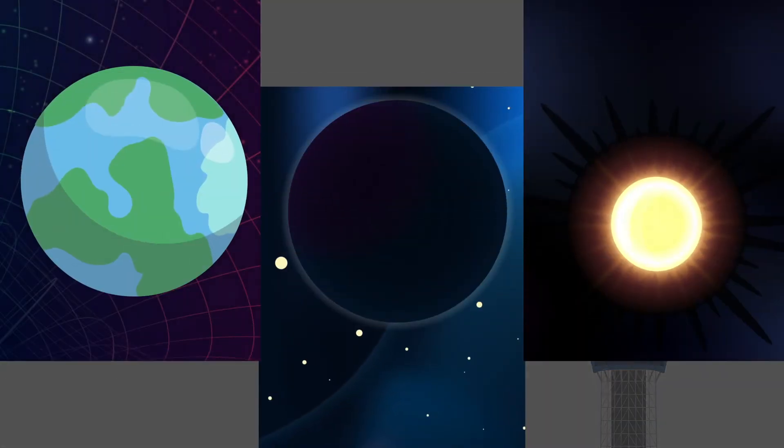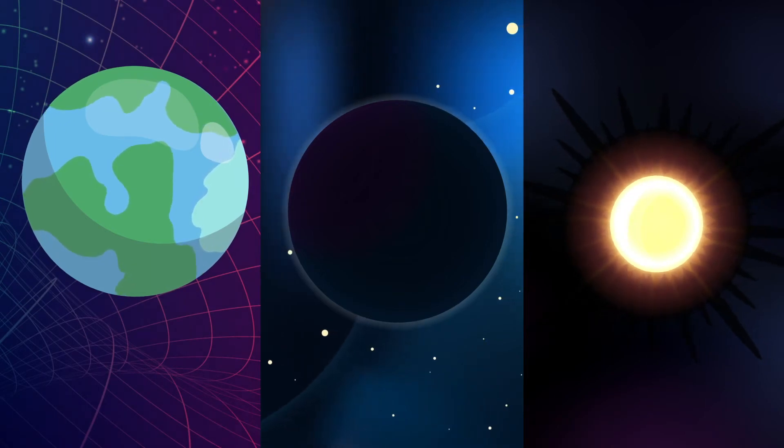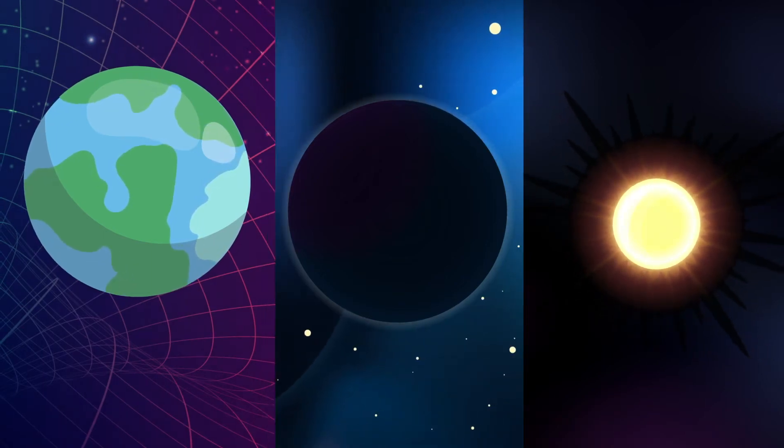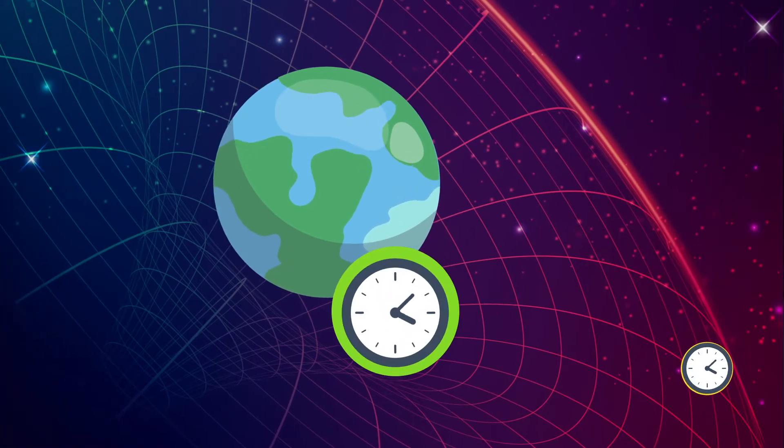Einstein theorized that massive objects warp spacetime, the fabric of existence throughout the universe. One consequence of that is that time runs differently between different gravitational fields, slowly in deep fields and faster in shallow ones.